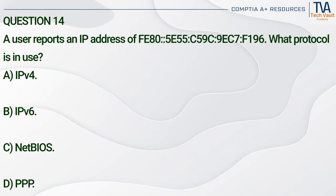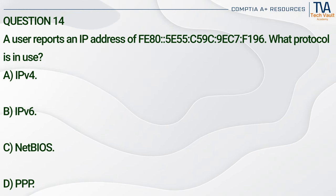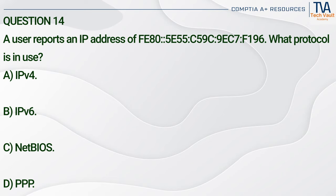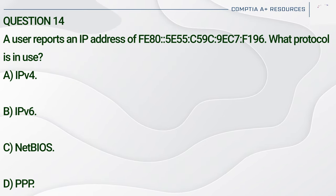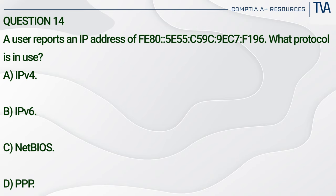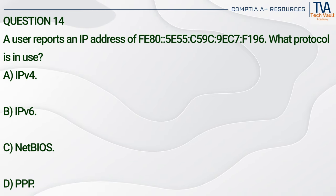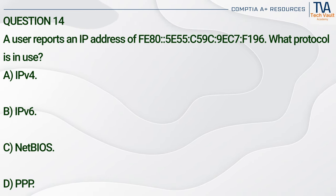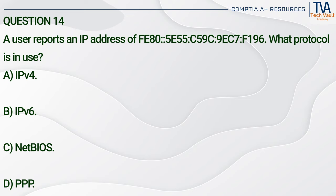Question 14. A user reports an IP address of FE80::5E55:C59C:9EC7:F196. What protocol is in use? A. IPv4. B. IPv6. C. NetBIOS. D. PPP.